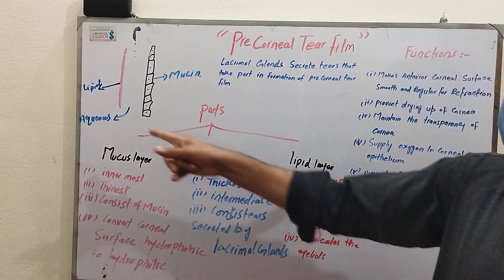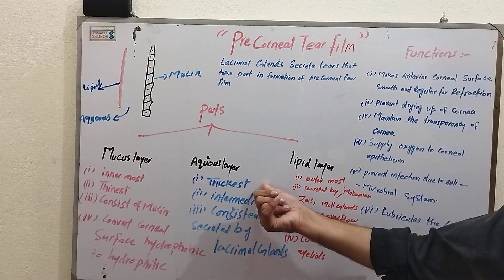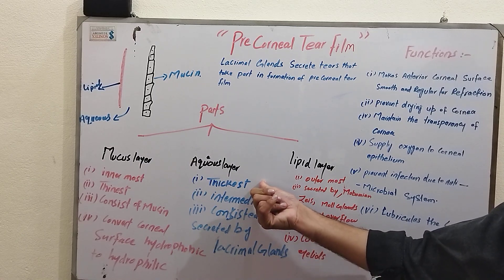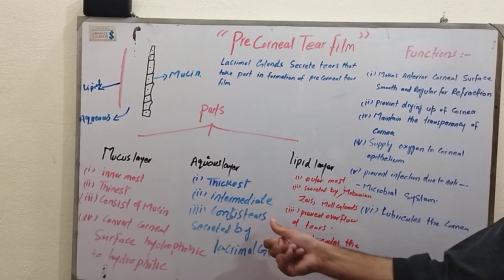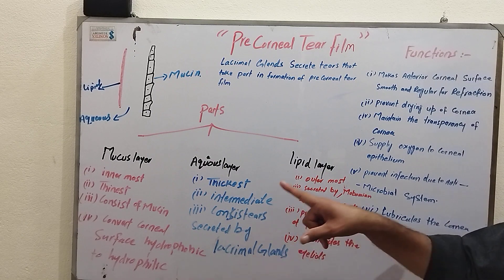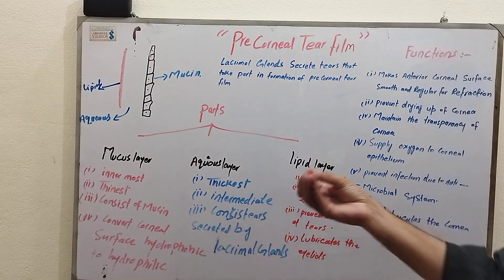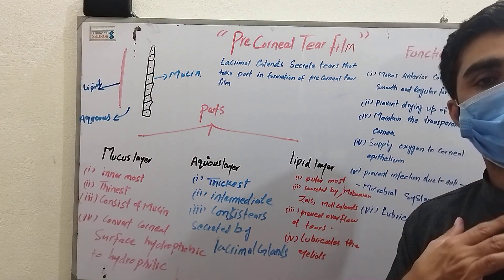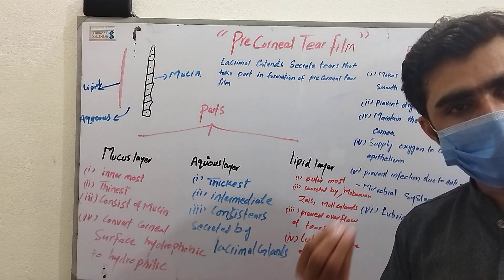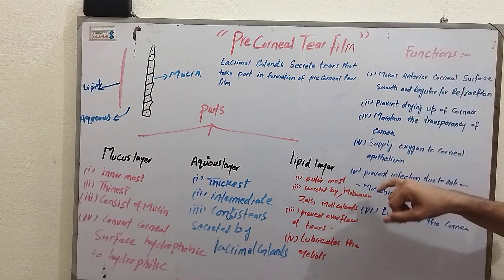Now we are going to explain the middle layer, that is the aqueous layer. It is the middle or intermediate layer. Always remember this is the thickest layer. It consists of tears, and those tears are secreted by the lacrimal glands.